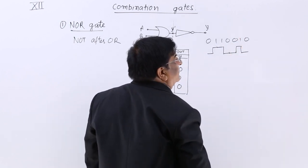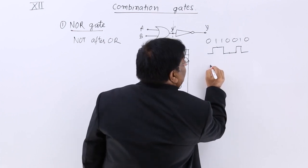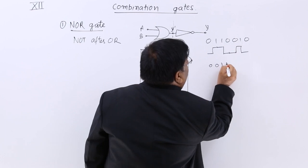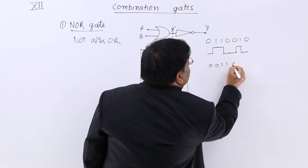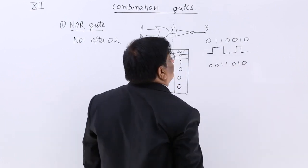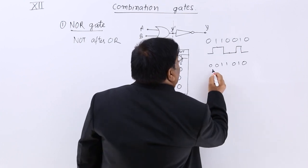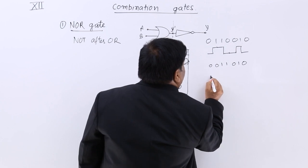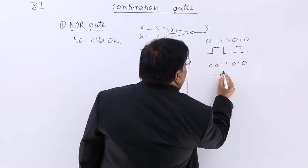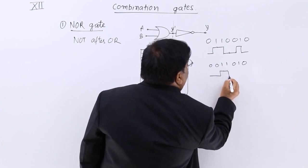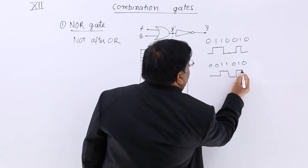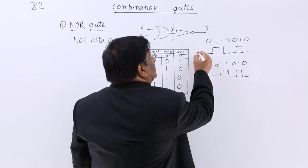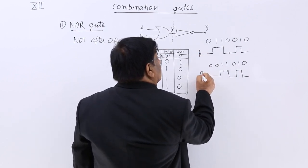The other input B has values: 0, 0, 1, 1, 1, 1, 0, 1, 0. And from these two inputs A and B we derive the result.